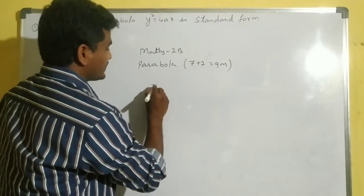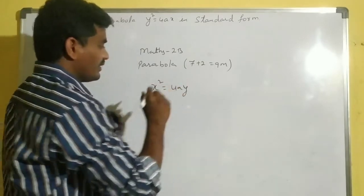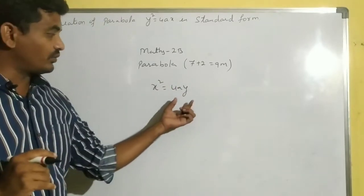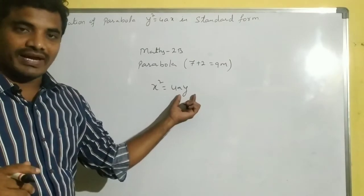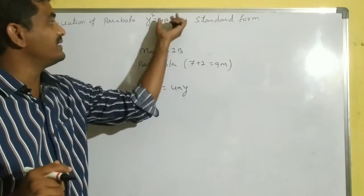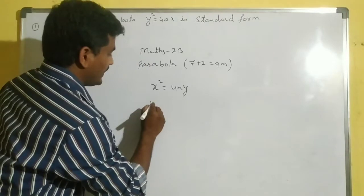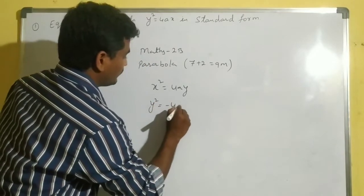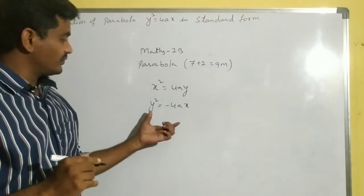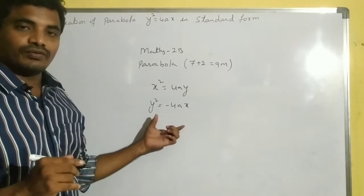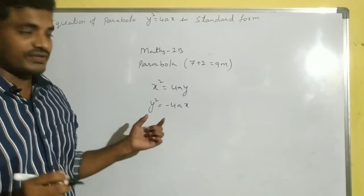If you take x² = 4ay, then this parabola is symmetric to the positive y-axis. When you take y² = -4ax, this is symmetric to the x-axis but on the negative side.